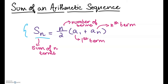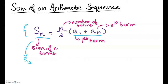S of n is like an indicator showing which amount of terms we are finding the sum for. So if you want to find the sum of the first 12 terms, you would write this as S of 12. Next is n over 2 — n stands for the number of terms, so if you want the sum of the first 12 terms, n would be 12.